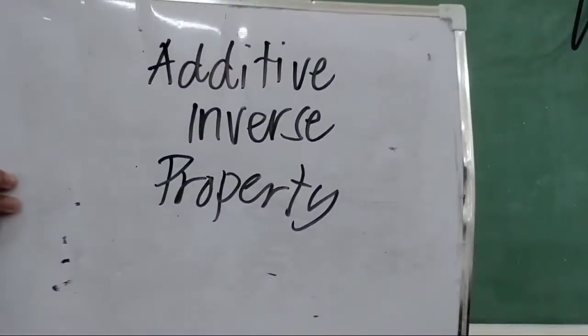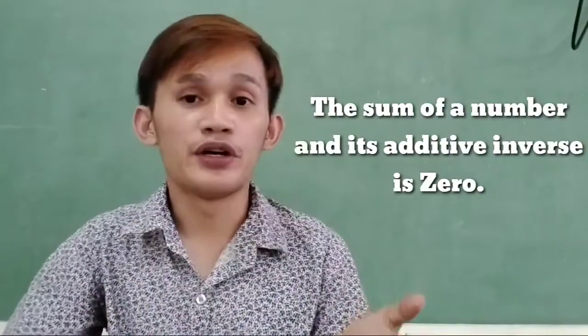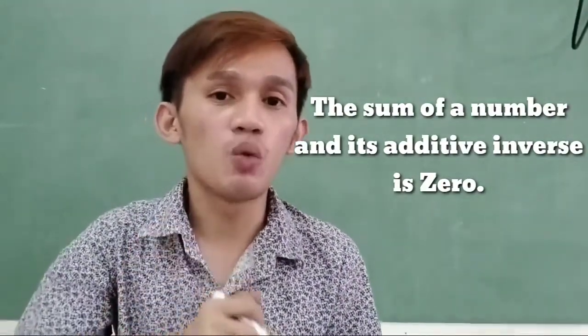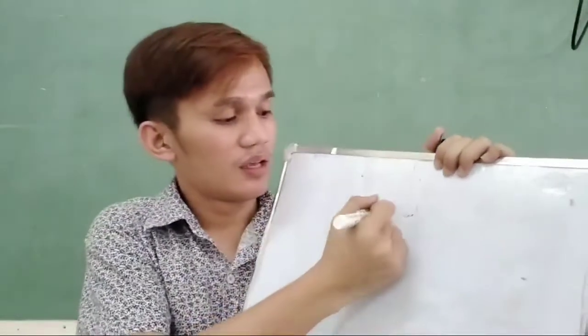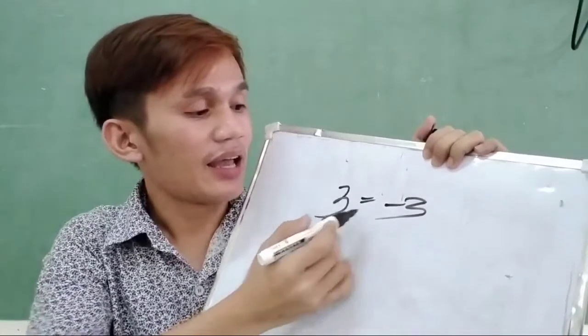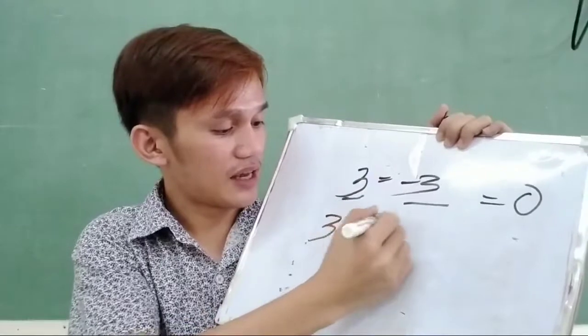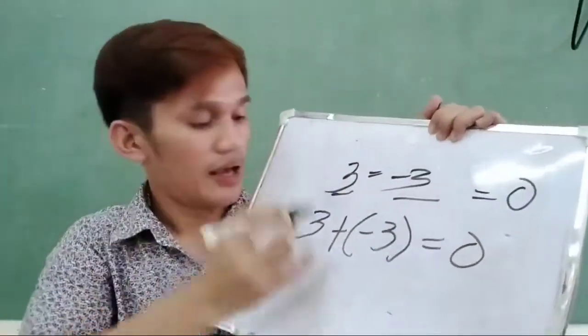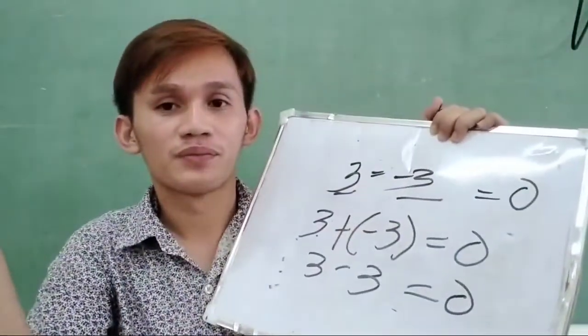So we are going to deal with the property of the additive inverse. According to this property, the sum of a number and its additive inverse is equal to 0. Is that really true? Let us see. Given the number 3, what is its additive inverse? That is negative 3. According to the property, the sum of the number and its additive inverse must equal 0. So 3 plus negative 3 is equal to 0 — because 3 plus negative 3 means 3 minus 3, which is 0.